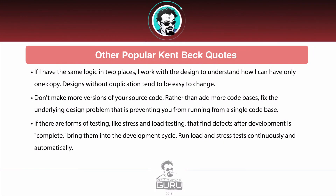Another popular quote from Kent: "If I have the same logic in two places, I work with the design to understand how I can only have one copy. Designs without duplication tend to be easy to change." This is a very important concept. I see this violated a lot — you repeat code, logic, and values in different places and it can really get you in trouble fast, especially on a larger system. If the same thing is replicated in two places, one changes and one doesn't — then which one's right?